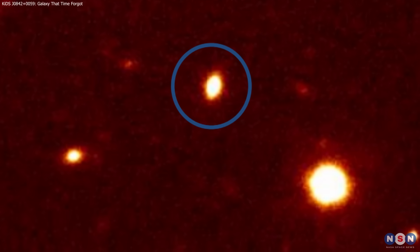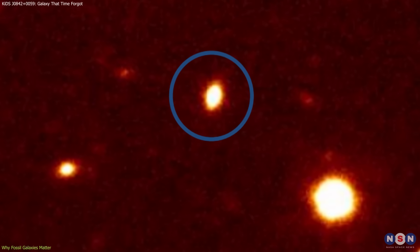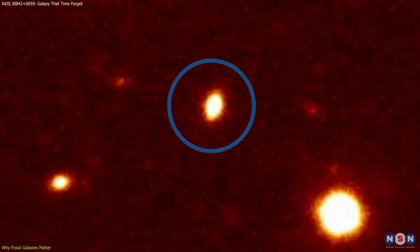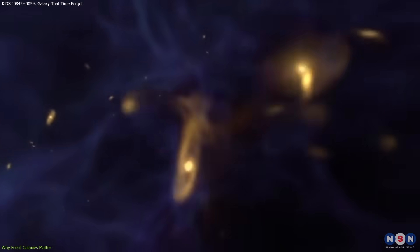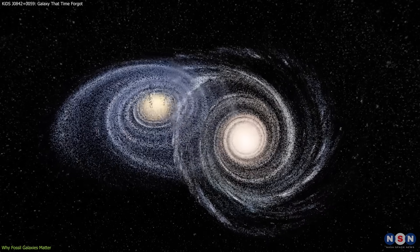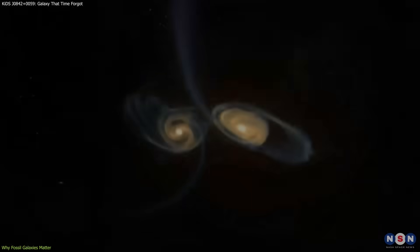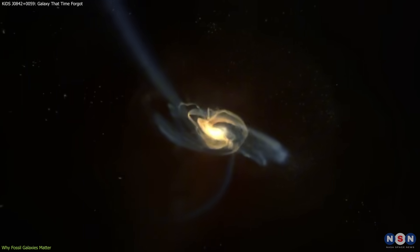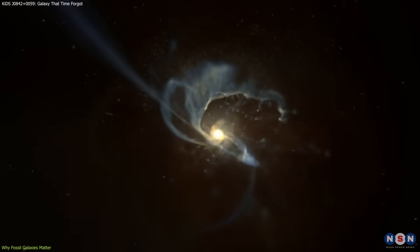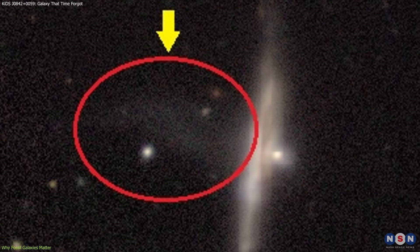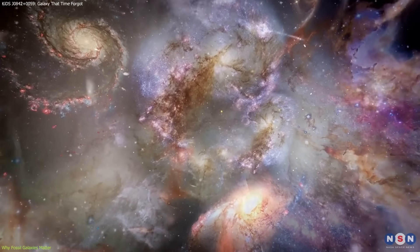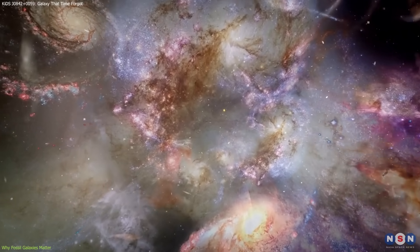What makes KIDS J0842+0059 especially valuable is how it challenges our existing models of galaxy formation. The dominant theory, hierarchical assembly, holds that most galaxies become massive by merging with others over time. Evidence for this process is abundant in the form of tidal debris, warp structures, and mixed-age stellar populations.